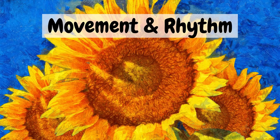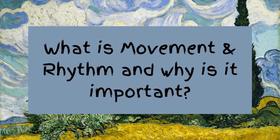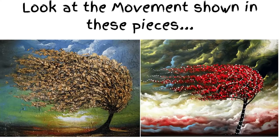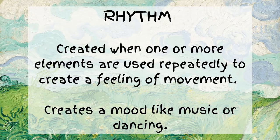Movement and rhythm: what are they and why are they important? Movement is the path the viewer's eye takes through a work of art, and it can be directed along lines, edges, shapes, and color. Rhythm is created when one or more of the elements are used repeatedly to create a feeling of movement.